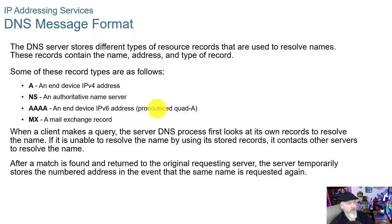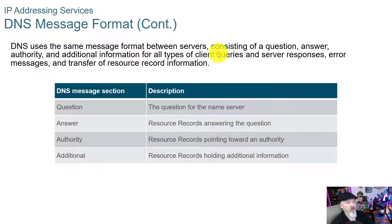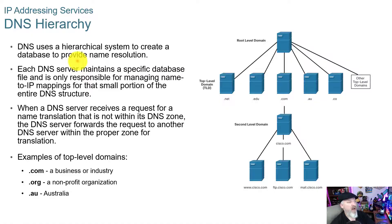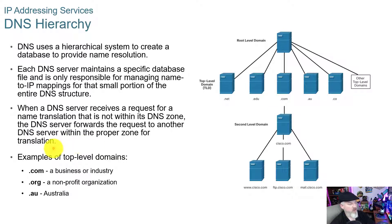Larger companies will maintain DNS servers internally so that DNS requests are handled internally, cutting down on network traffic through their ISP. DNS uses the same message format between servers consisting of a question, answer, authority, and additional information. DNS uses a hierarchical system to create a database for name resolution. Each DNS server maintains a specific database file and is only responsible for managing name-to-IP mappings for its small portion of the DNS structure. When a DNS server receives a request for a name translation outside its zone, it forwards the request to another DNS server within the proper zone. Examples of top-level domains include .com, .org, .us, and .au.